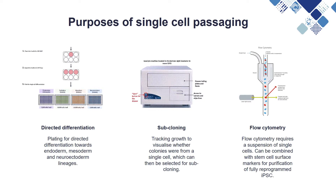If you intend to differentiate your iPSCs into a specific cell type, you may need to seed them at a specific density, so it's very helpful to start with a single cell suspension. If you are subcloning your iPSCs, single cell passaging and then tracking the growth of colonies can allow you to be certain that each colony is derived from a single iPSC. Additionally, if you intend to perform flow cytometry, a single cell suspension is required.